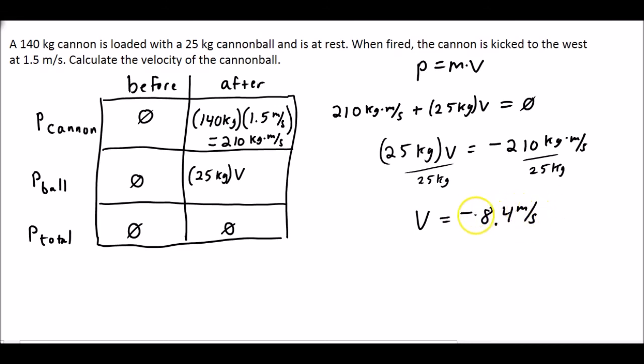We can't leave it at negative; that doesn't really make much sense. But we know that the cannon is kicked out to the west, and so negative west is east. So our final answer, one that makes sense, is 8.4 meters per second to the east.